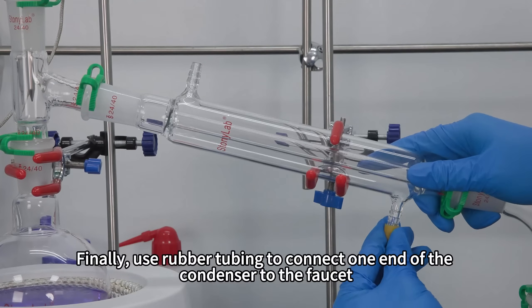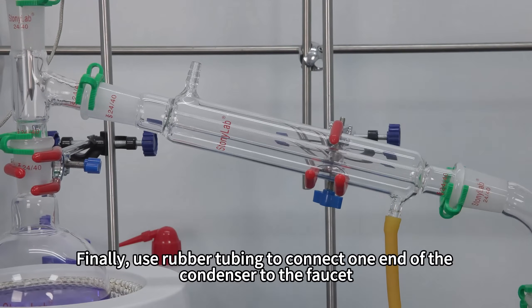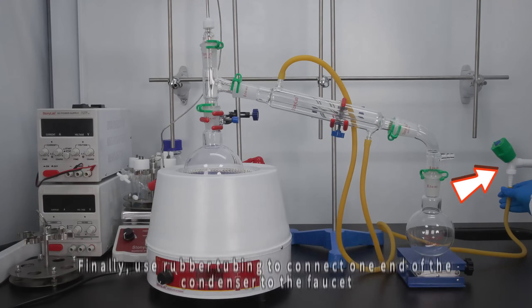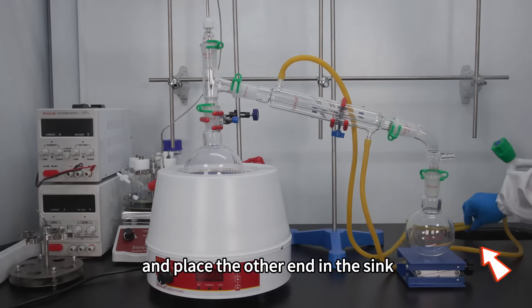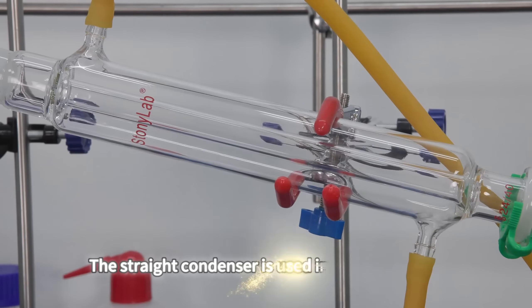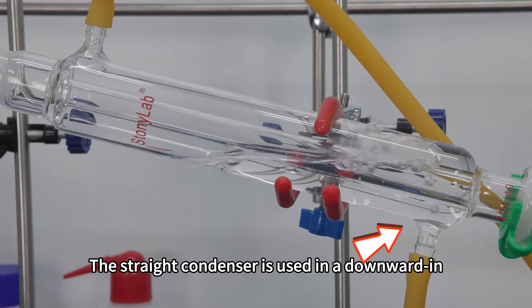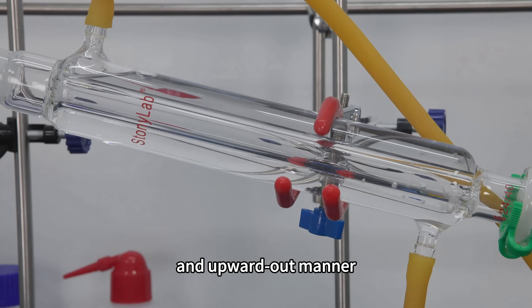Finally, use rubber tubing to connect one end of the condenser to the faucet and place the other end in the sink. The straight condenser is used in a downward-in, upward-out manner.